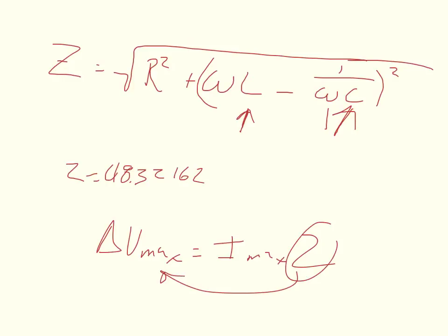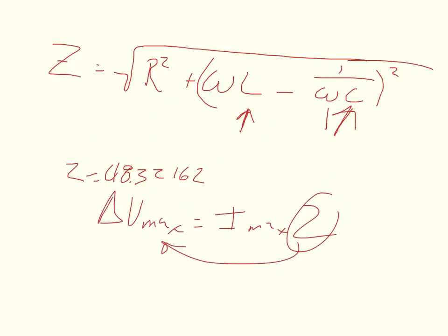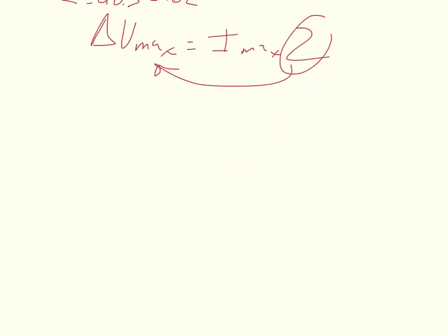We just solve for it. So we get ΔVmax over the impedance equals the maximum current.